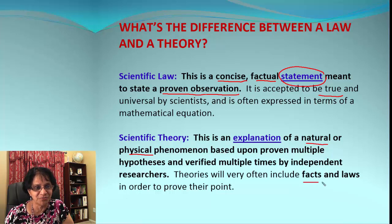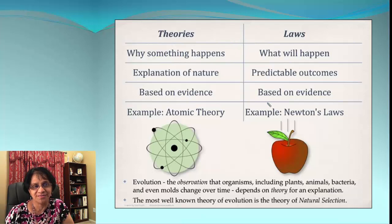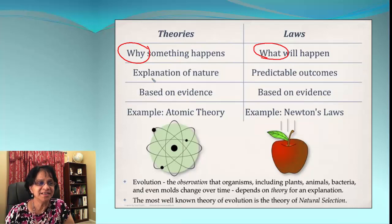In case you're confused, this will be helpful. Theories tell you why something is happening—they give you explanation. Laws tell you what is going to happen—it's a prediction. Both theories and laws are based on evidence and facts.